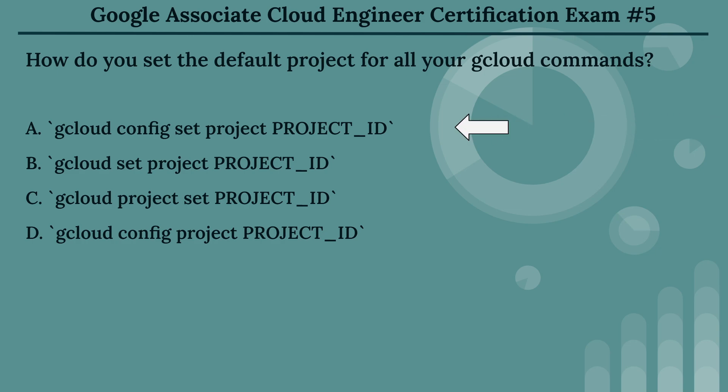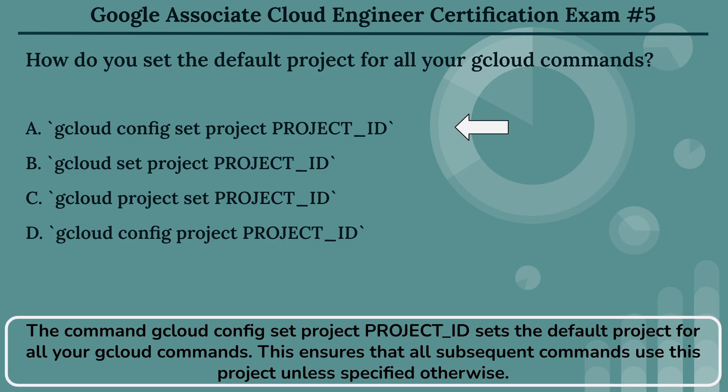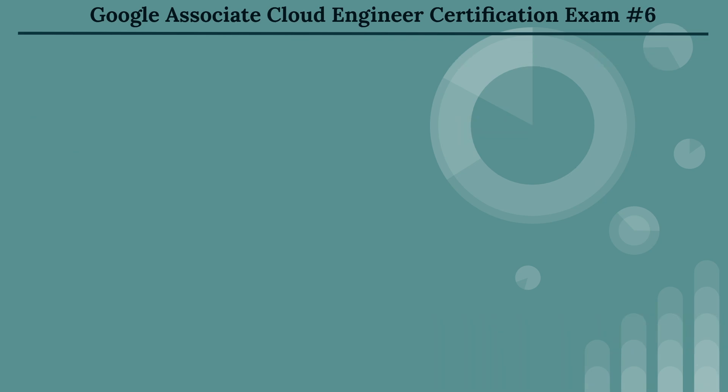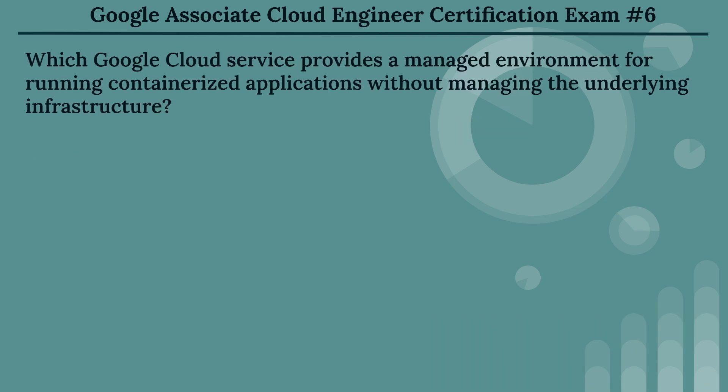The right answer is Option A: gcloud config set project PROJECT_ID. The command gcloud config set project PROJECT_ID sets the default project for all your cloud commands. This ensures that all subsequent commands use this project unless specified otherwise.